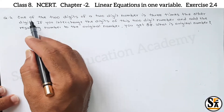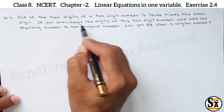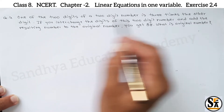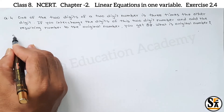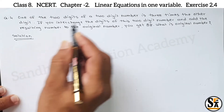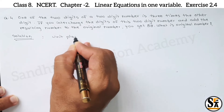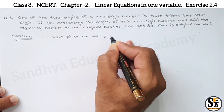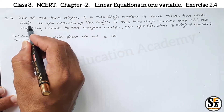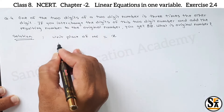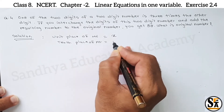Now let's see question number 4. One of the two digits of a two digit number is three times the other digit. If you interchange the digits of this two digit number and add the resulting number to the original number, you get 88. What is the original number? In the solution, we will assume unit place of number as x. Then since one digit is three times the other, the 10th place of number equals 3x.